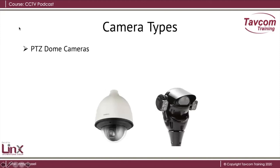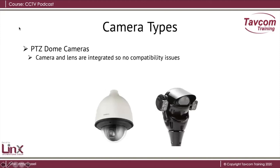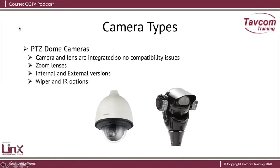PTZ dome cameras. Again, when you buy them, the camera and lens is integrated, so there's no compatibility issues. But now we have zoom lenses, as opposed to fixed focal length or varied focal length lenses. Internal and external versions are available, and wiper and infrared light options are also available. The image on the left is a type of camera that you might find within a shopping mall. The image on the right is a camera a bit more ruggedized, which you may find in a commercial site or even in a town centre. You can just see the wiper at the bottom of the glass, and it's also got infrared lights and white lights as well.